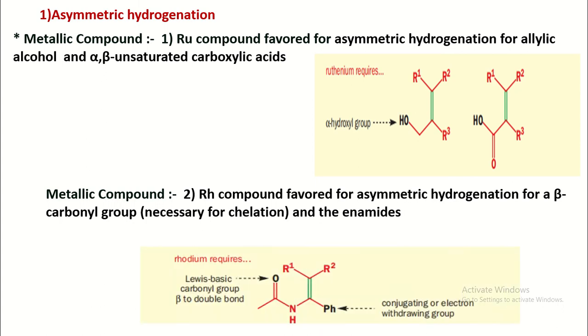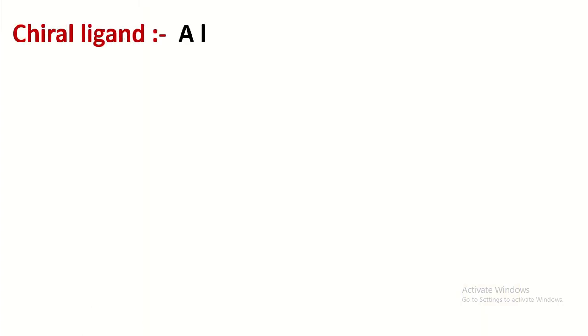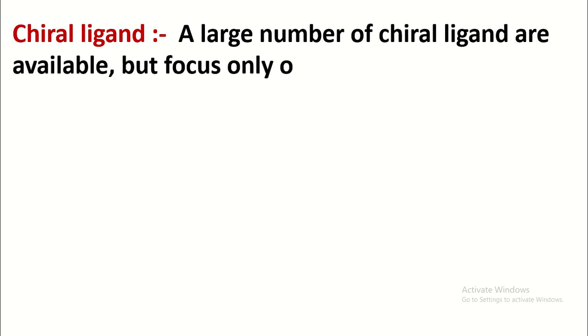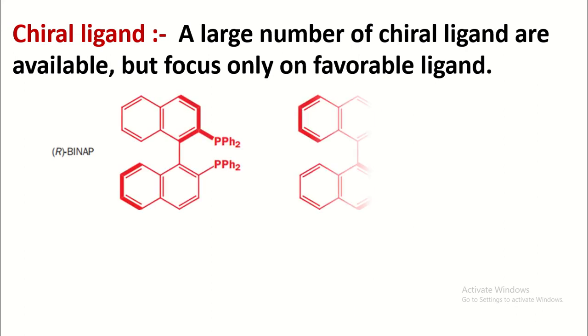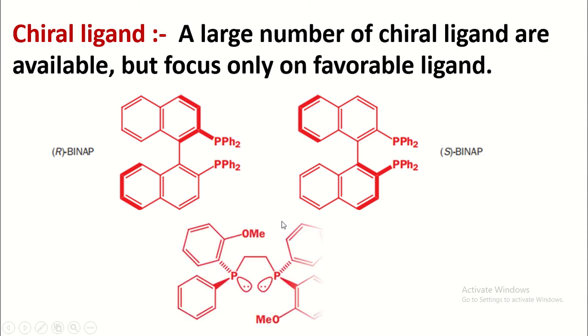It is useful for beta-keto group and enamide. Now chiral ligand is also required for such a purpose. A large number of chiral ligands are available, but focus only on phosphorus ligands, that is R-BINAP and S-BINAP. Such ligands do not contain any type of chiral carbon, but it is optically active because the carbon-carbon single bond cannot be easily rotated due to steric effect. It is called atropisomerism phenomenon.